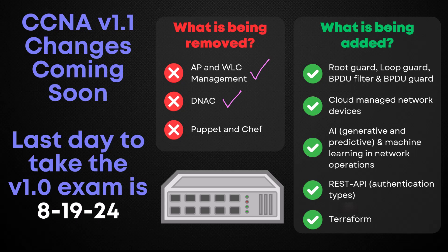Next, DNAC — which is now called the Cisco Catalyst Center — is also being removed. It's still a software-defined access controller, just rebranded, but there hasn't been as much momentum with that product, which could be why it's coming off the exam. Then we have Puppet and Chef being removed. Ansible is not being removed and remains relevant to the CCNA exam, but Puppet and Chef haven't been adopted as widely, so there's less need to know those tools.